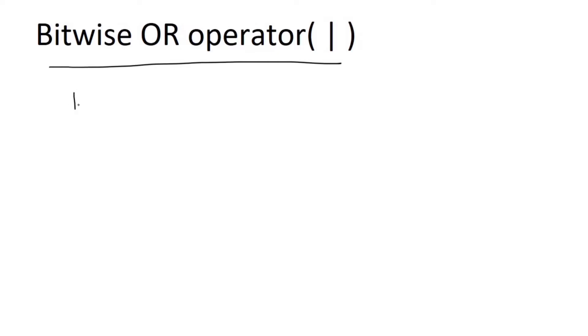The truth table has columns A, B, and the output. The inputs are 0 0, 0 1, 1 0, and 1 1.